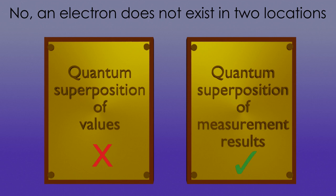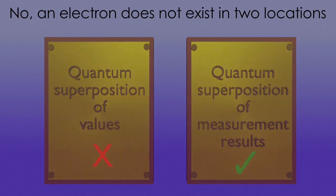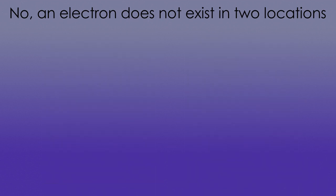So, what does this mean? Instead of location, let's look at the spin of an electron, because it's easier to visualize. Here's an electron, and we don't know what spin it has,